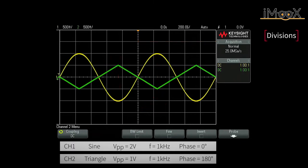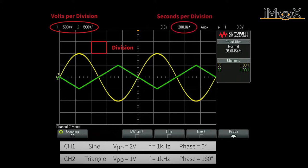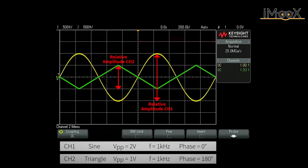Having a look at the screen, we see a grid that is dividing the screen into so-called divisions. Furthermore, the scope provides scale factors that define the volts per division for each channel and the seconds per division respectively. And in our case, the channels are both at 500 millivolts per division and the time scale is at 200 microseconds per division. In this way, the peak to peak voltages as well as the period can be calculated by counting the divisions.